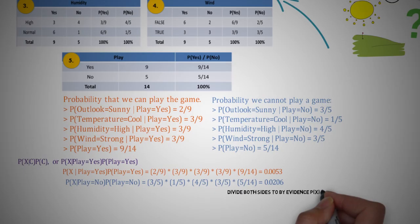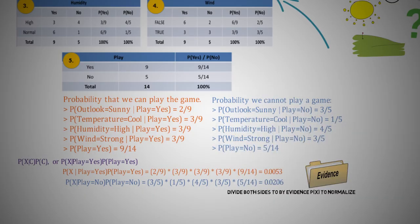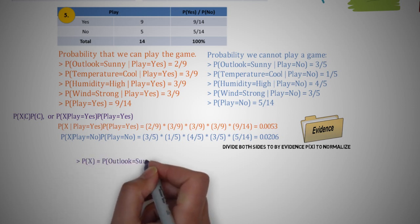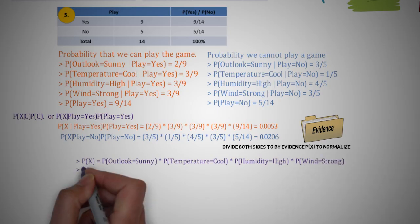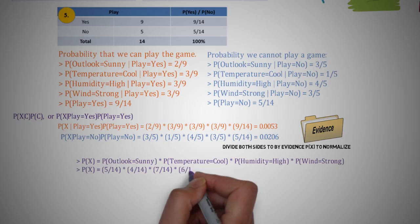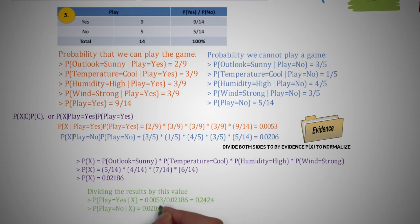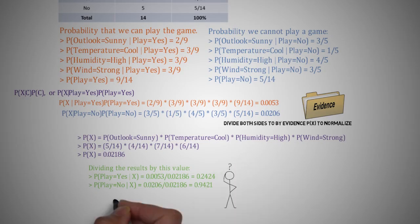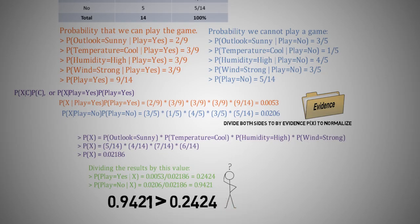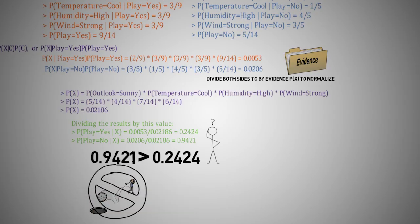Finally, we have to divide both results by the evidence, or probability of x, to normalize. The evidence for both equations is the same, and we can find the values within the total columns of the lookup table. Therefore, P(x) equals the probability that outlook is sunny × probability temperature equals cool × probability humidity is high × probability wind equals strong, which gives us P(x) = 0.02186. Dividing the results by this value, we get the probability that we play golf given x = 0.2424, and the probability that we don't play given x = 0.9421. Since 0.9421 is greater than 0.2424, the answer is no — we cannot play golf today.